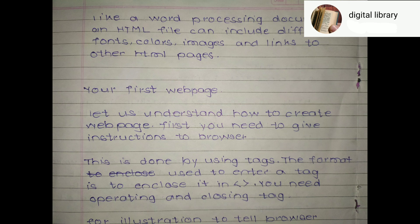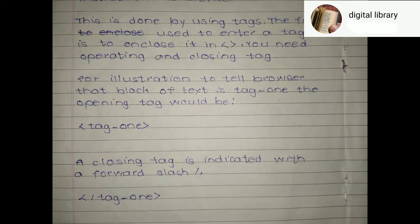To create your first web page, you need to give instructions to the browser. This is done by using tags. The format used to enter a tag is to enclose it in angle brackets. There are two main tags: an opening tag and a closing tag. For illustration, to tell the browser that a block of text is tag1, the opening tag would be tag1, and the closing tag is indicated with a forward slash.